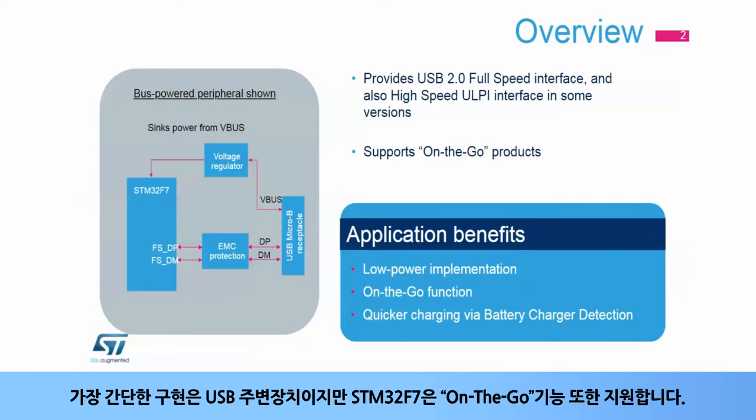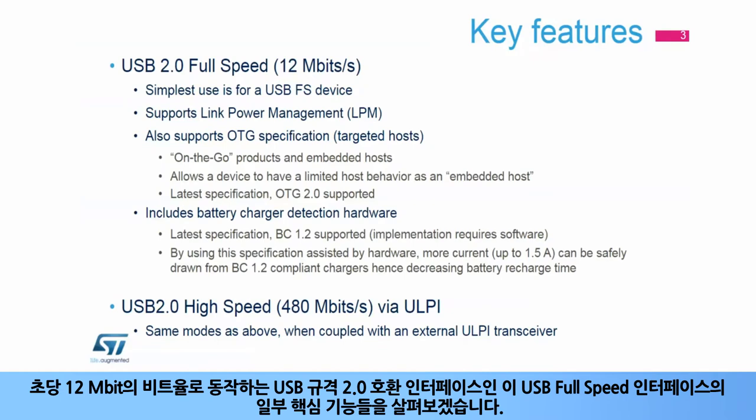The STM32F7 also supports the USB on-the-go functionality. Let's look at some of the key features of this USB full-speed interface, which is a USB specification 2.0 compliant interface that operates at a 12 megabit per second rate.